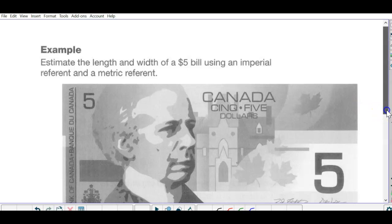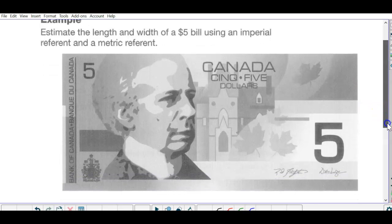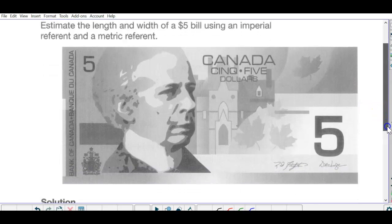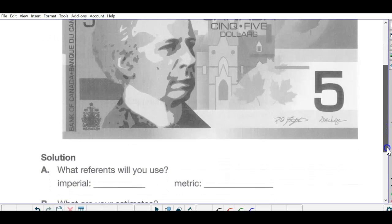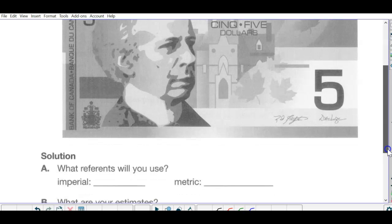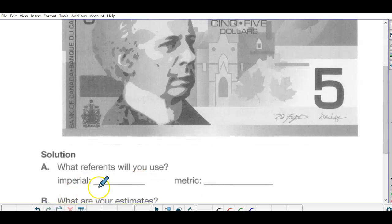Take a look at the next page. It's got a copy of a five dollar bill. It says estimate the length and width using an imperial referent and a metric. So what reference which will you use? Well I said for imperial for me closest to an inch was from the knuckle to tip of thumb. Okay.